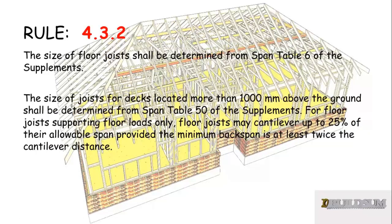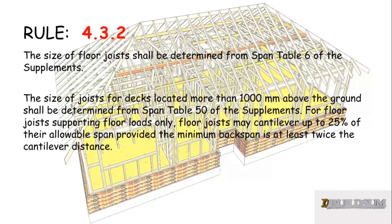Rule 4.3.2 says that the size of floor joists shall be determined from Table 6 of the supplements. For the size of joists for decks located more than a metre above the ground, the size shall be determined from Table 50 of the supplements. Floor joists supporting floor loads only may cantilever up to 25% of the allowable span, provided the minimum backspan is at least twice the cantilever distance.